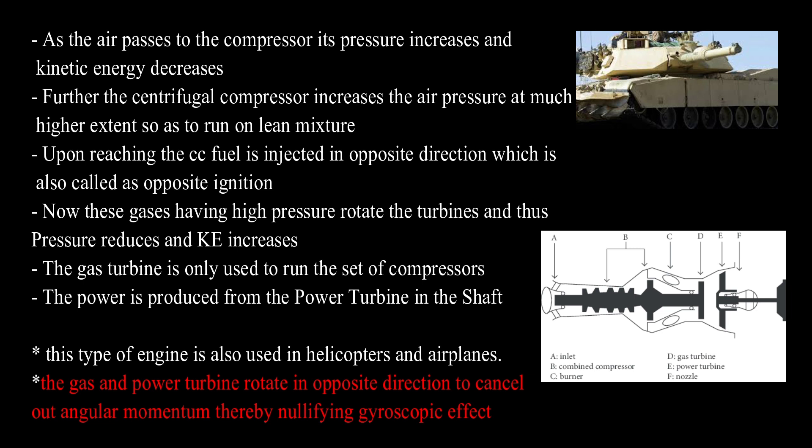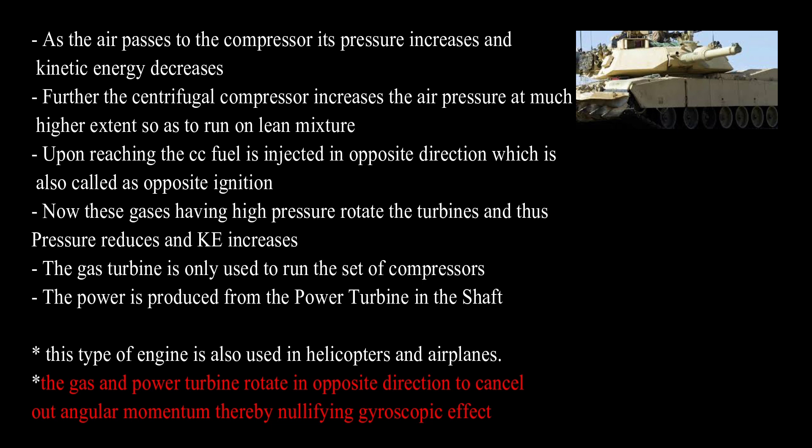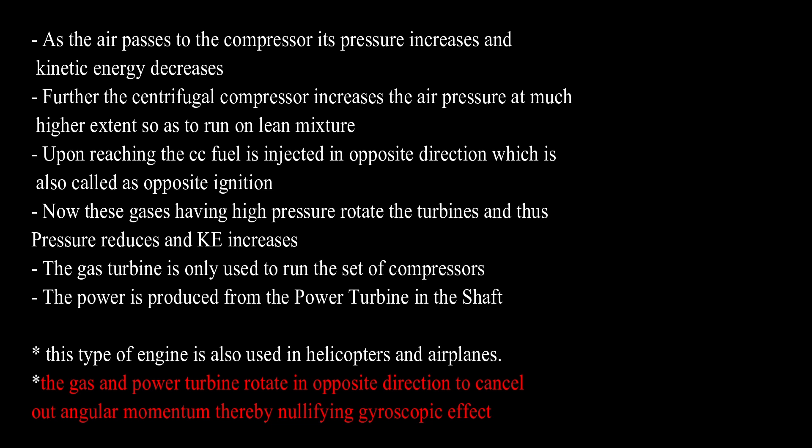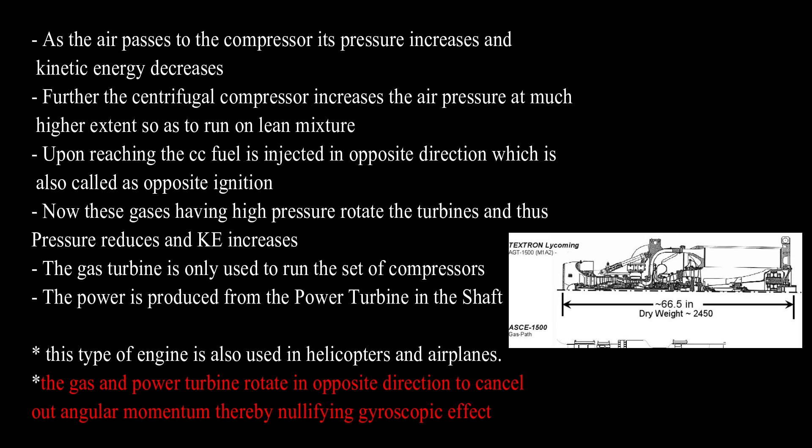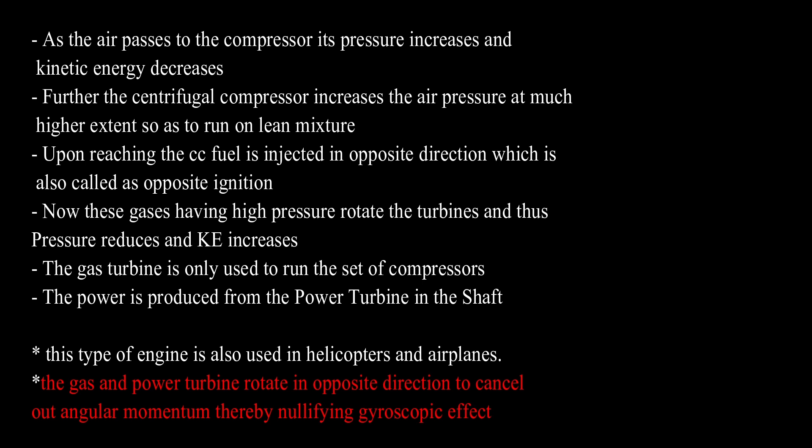The centrifugal compressor increases the pressure considerably so the engine can run on a lean mixture. Fuel is injected inside the combustion chamber in the opposite direction, also called opposite ignition. The gas acquires high pressure and rotates the turbine, increasing kinetic energy. The gas turbine only runs the compressor; power is obtained from the power turbine. The gas and power turbines rotate in opposite directions to nullify the gyroscopic effect in helicopters.